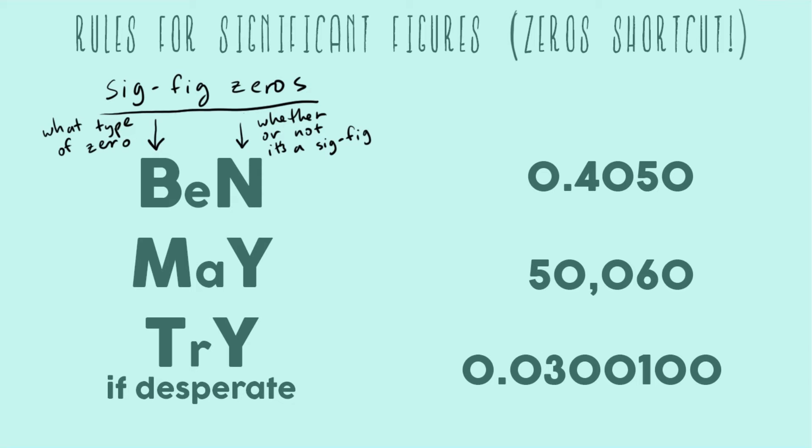So first the B in Ben, that's all the zeros that are before non-zeros. So B for before. And so if you're before a non-zero the answer to whether or not you're a sig fig is no. You are never a sig fig if you are before non-zeros.